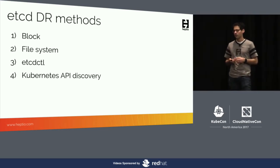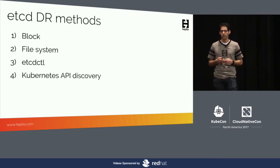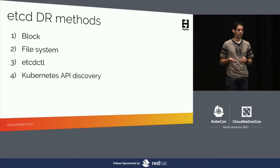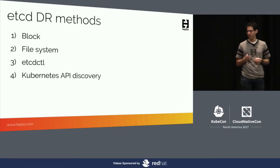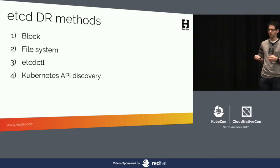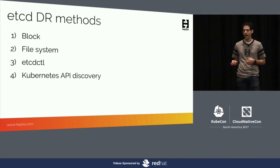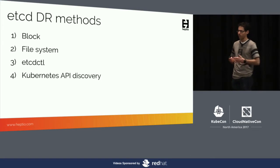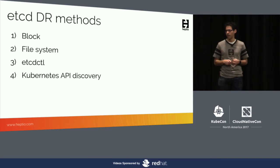Another option is to use etcdctl. They have a great feature as part of the etcd 3 API to take a snapshot of your etcd database and, at some point in the future, restore it. You've got to be a little careful though, because if you do a snapshot and restore, when you restore it ends up creating a brand new etcd cluster. This effectively means you will have an outage if you go this route, but it's a good tool to have in the event of a total outage — you can certainly recover some of your etcd state this way, assuming you have backups.